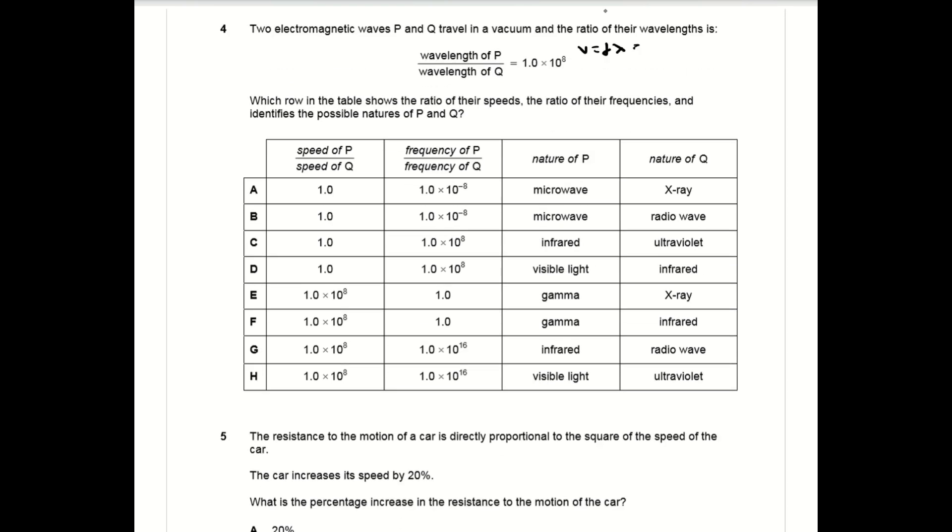For question four, it's important to know your properties of EM waves. All EM waves travel at the same speed, which automatically rules out answers E to H. From the relationship v equals f lambda, if v is constant then f is inversely proportional to lambda, so the ratio of frequencies is equal to one over the ratio of wavelengths, which means the answer can only be A or B.